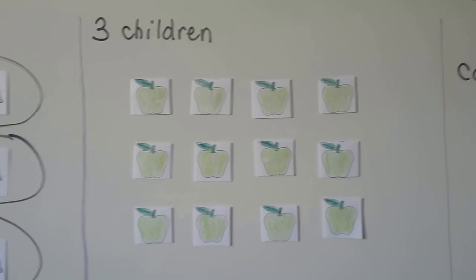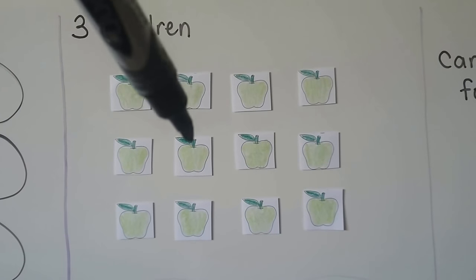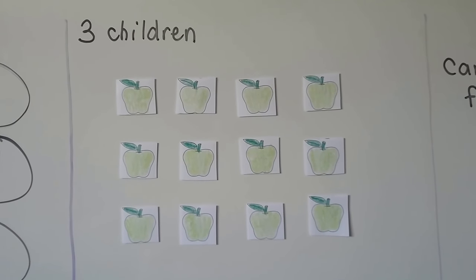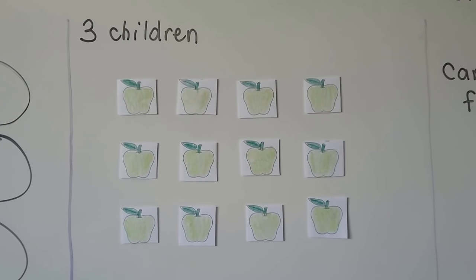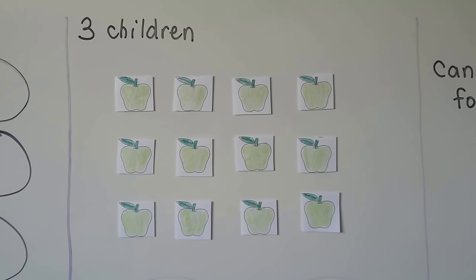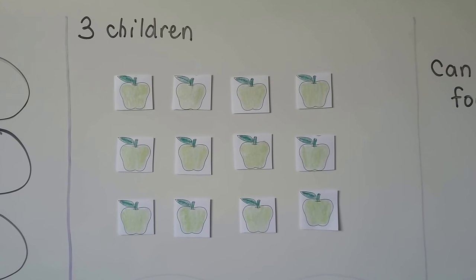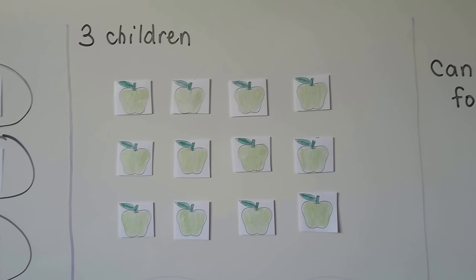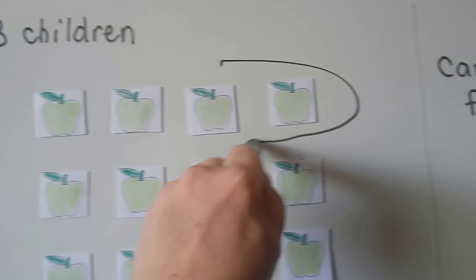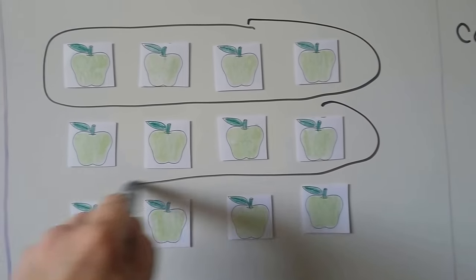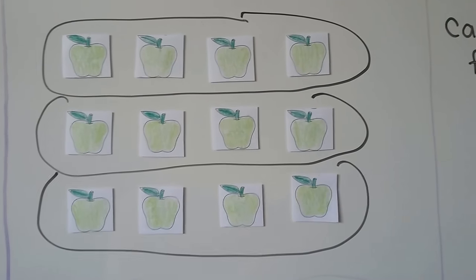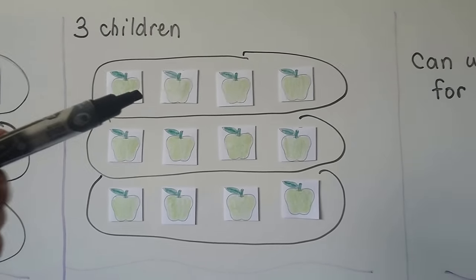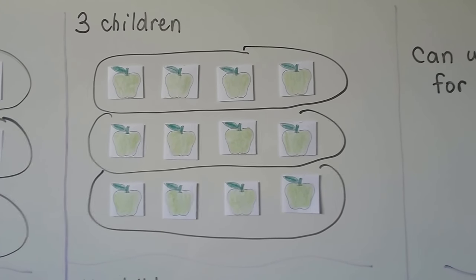Now we have three children and we have one, two, three, four, five, six, seven, eight, nine, ten, eleven, twelve apples. We need to circle each child's fair share and separate the twelve apples evenly. We can make one group, two groups, three groups. Each child will get a group — they'll get one of the three groups — they'll get one-third of the apples each.